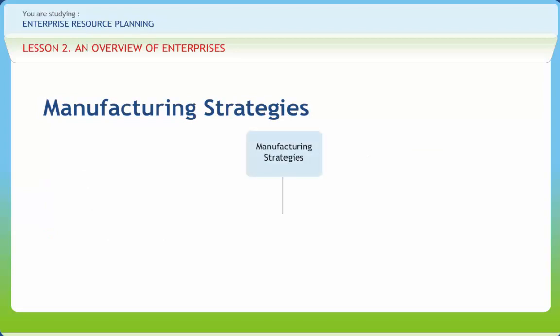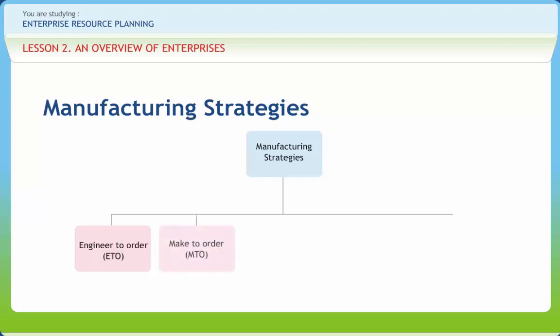There are several manufacturing operation strategies a company can choose. First is engineer-to-order, where the product can be manufactured as per order at a price. Second is make-to-order, where the customer order is received first and then the company starts processing for that product. Third is assemble-to-order, where operations are standardized according to forecasts and modules or packages are assembled after receiving the customer's order. Fourth is make-to-stock, where the company manufactures products and keeps them in stock or inventory before receiving orders, and customers can purchase directly from inventory at a retail outlet, factory, or distribution center.